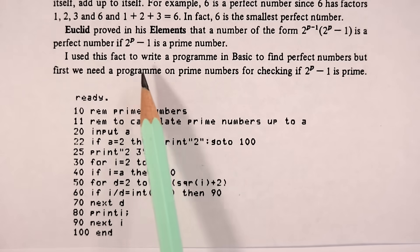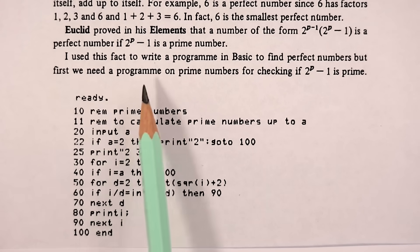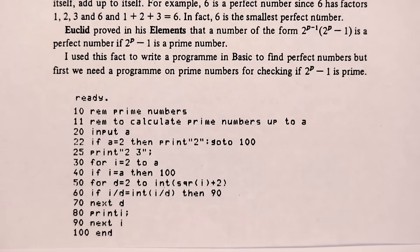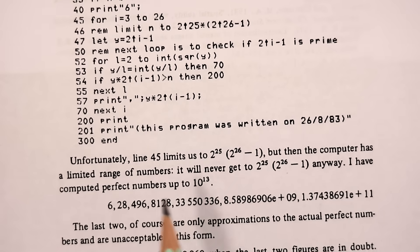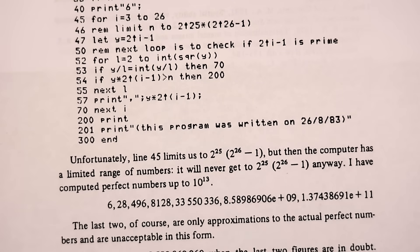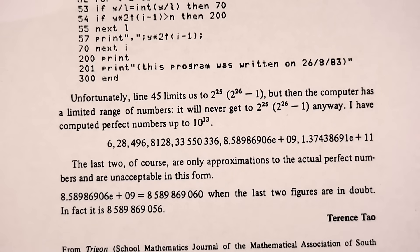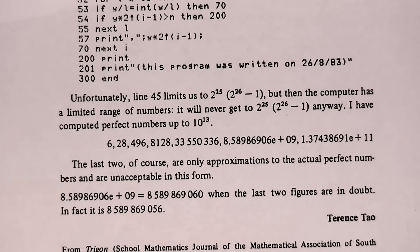So Terence says that he has used this fact to write a program in basic to find perfect numbers, which starts with a program for checking if two to the p minus one is prime. Then he computes perfect numbers up to 10 to the 13. Yet again, another example of just how outstanding he is. It's been humbling for me to read through these notes. I hope that it doesn't seem discouraging to any aspiring mathematicians out there as I'm sure Terence Tau would even agree that many of the great mathematicians followed a more conventional path through education.